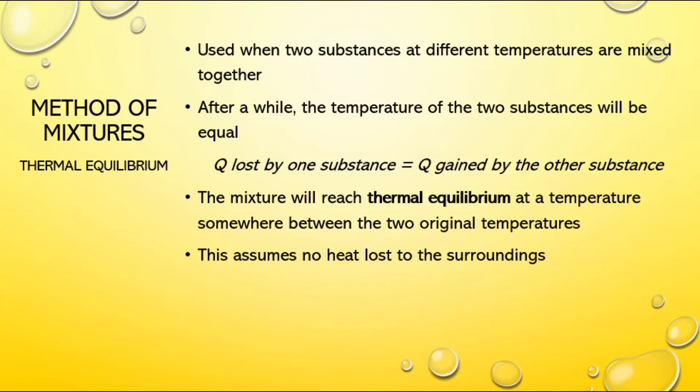Calculating the heat needed to raise or lower the temperature of various materials is handy. But it's also handy to know about what happens when you mix two different substances at two different temperatures, two different masses. We call that reaching thermal equilibrium because when you put these two substances together, one of them is going to lose some heat and one of them is going to gain some heat. They're going to come to thermal equilibrium at the same temperature.